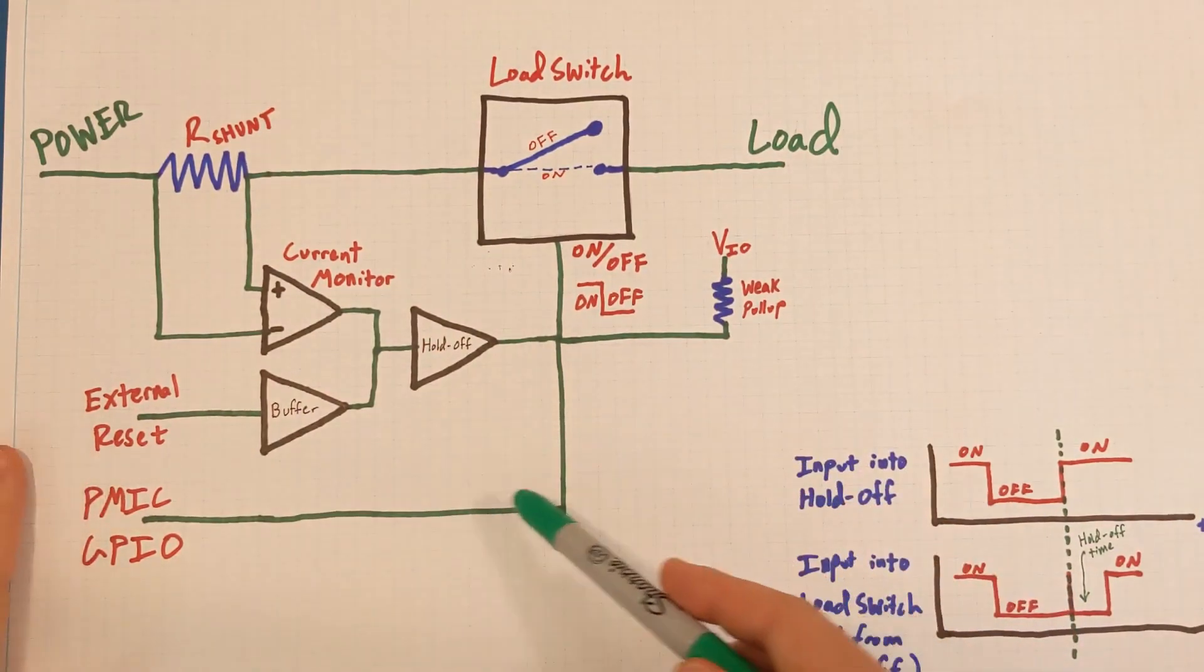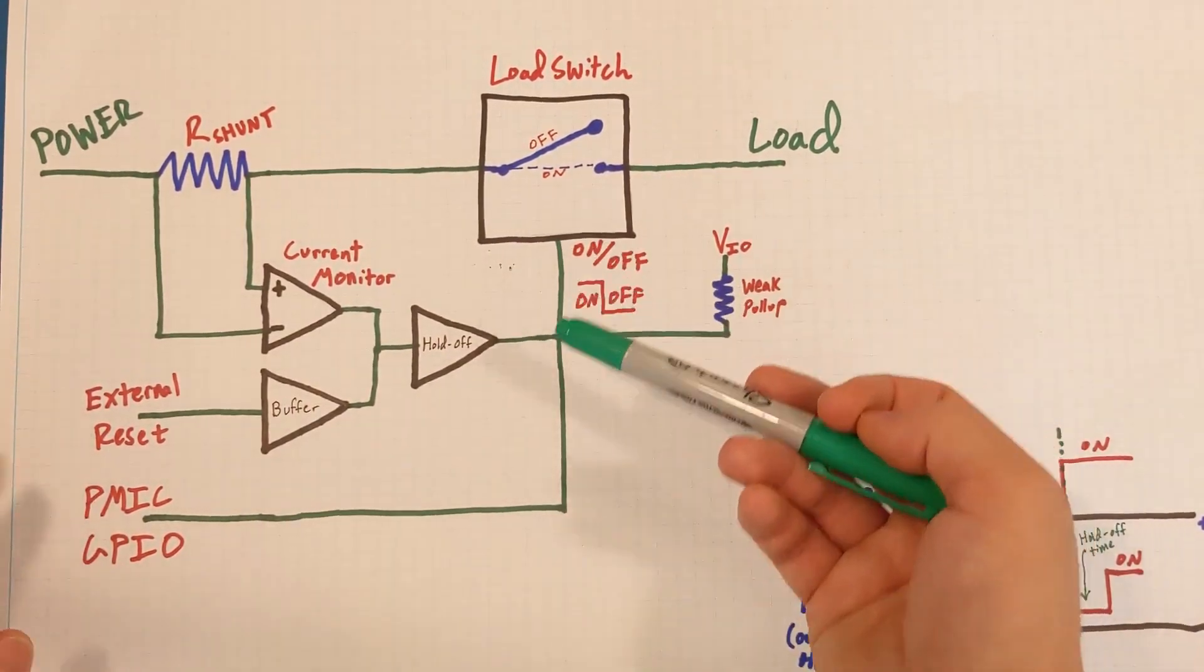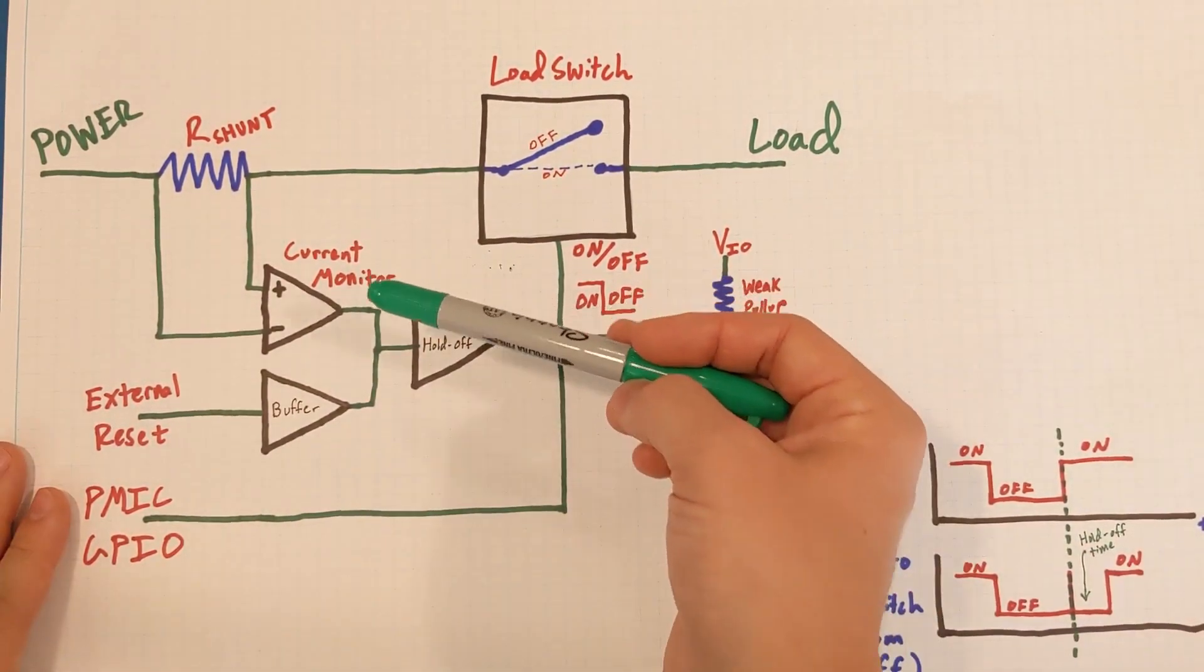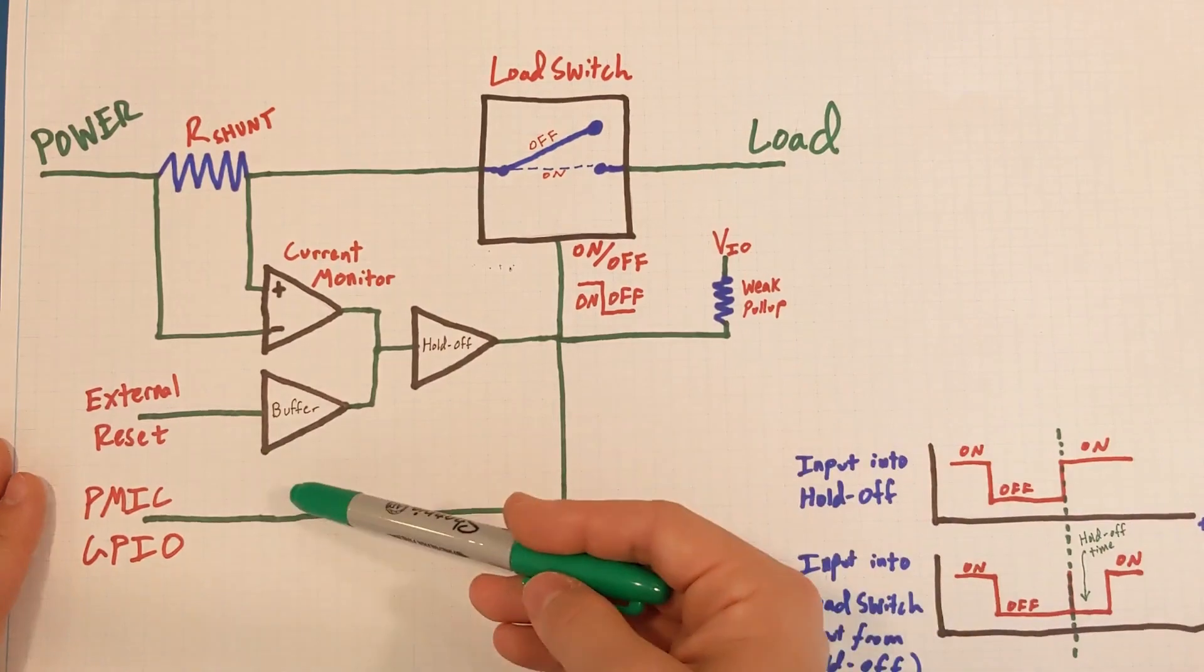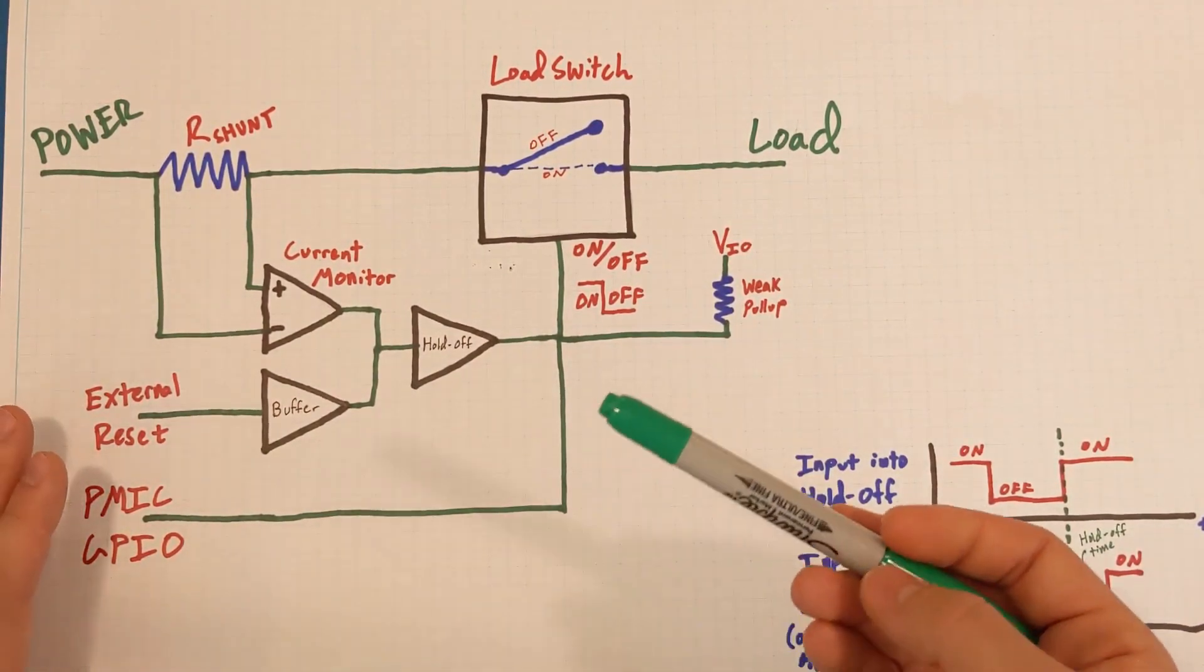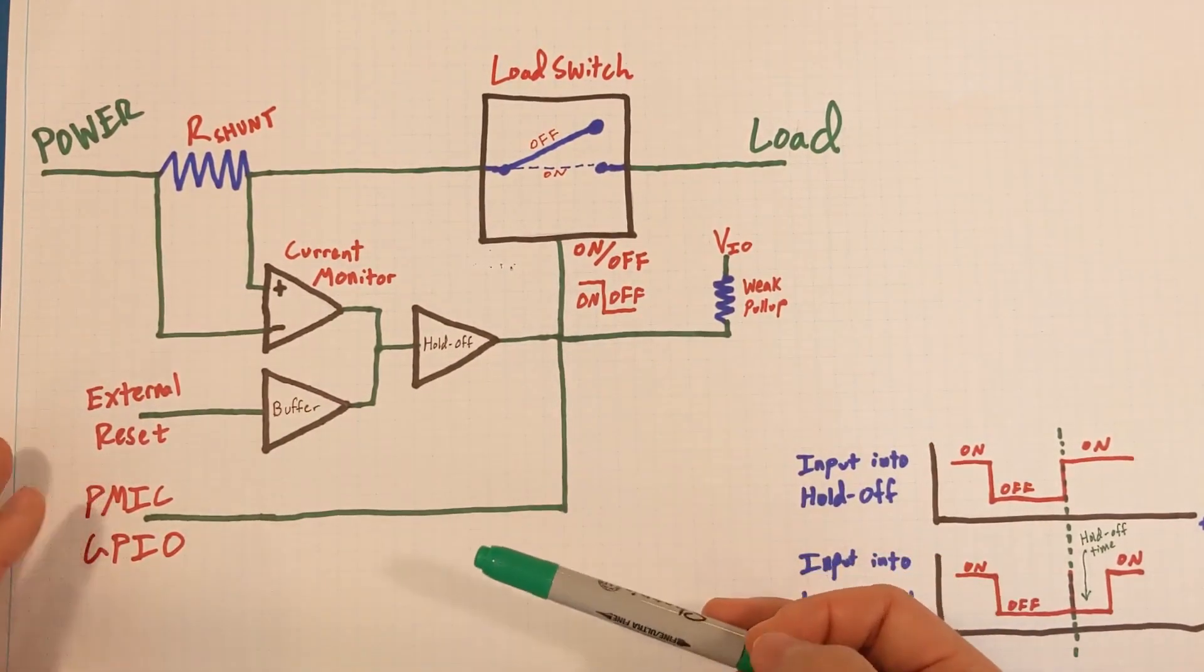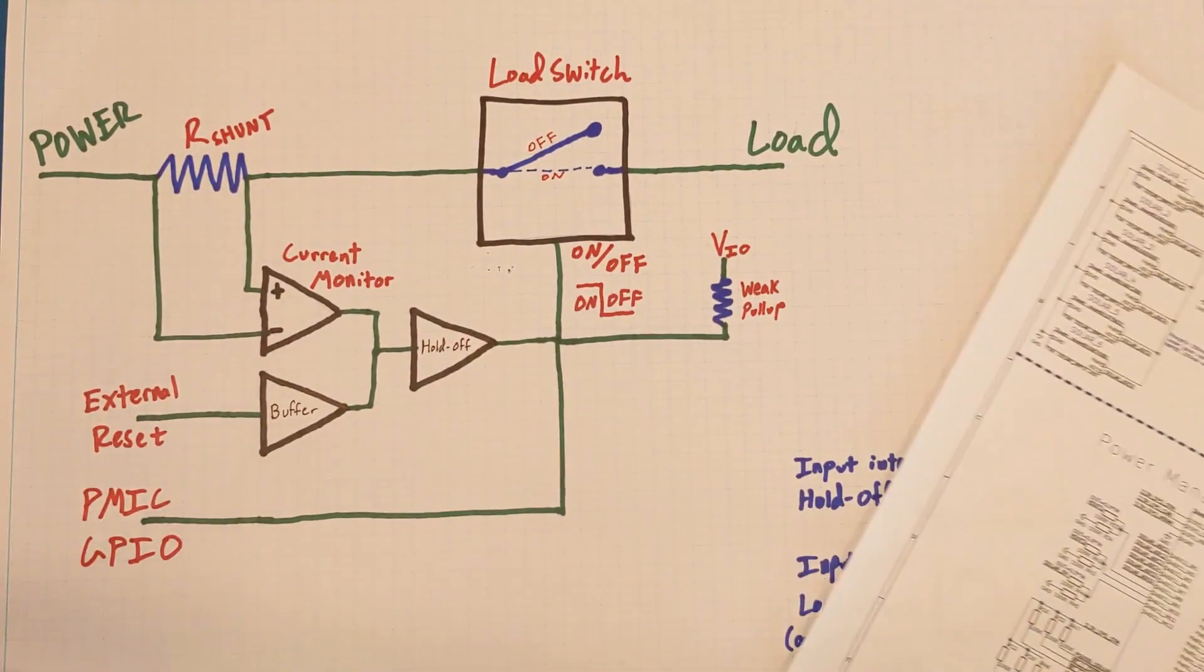What I really like about this circuit is how this PMIC GPIO is both an input into the circuit, turning off the load switch if I so want, and it is also an output out of the circuit, indicating to the power management IC if an overcurrent event happens, or if there is some external reset. That is because since this is weakly pulled up, the PMIC does not have to do anything if it wants this load switch to be on. The PMIC can simply watch this line to see if anything pulls it low. The current monitor or external reset could pull this line low, indicating that something outside has happened that the power management IC should be aware of.